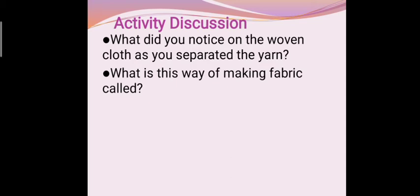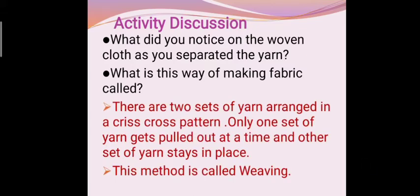What did you notice on the woven cloth as you separated the yarn? What is this way of making fabric called? There are two sets of yarn arranged in a criss cross pattern. Only one set of yarn gets pulled out at a time and other set of yarn stays in place. This method is called weaving.